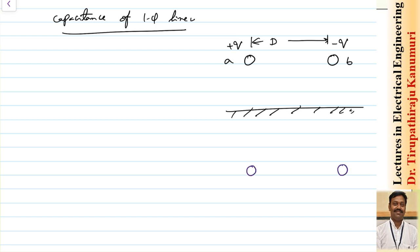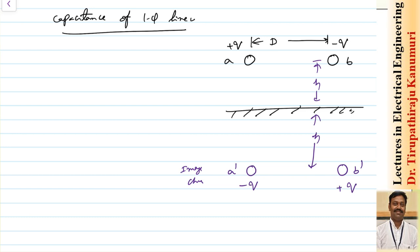As per the method of images, I can assume that there are opposite charges lying below the earth. I am taking two image charges here: the image of conductor A, which I call A dash, will have charge minus q (opposite to A above). Similarly, B dash will have charge plus q (opposite to B above). These are the image charges. The height is equal to h as per method of images, and the distance from conductor A dash to B — or conductor B dash to A — will be equal to the square root of 4h squared plus d squared.